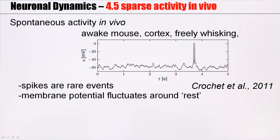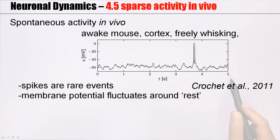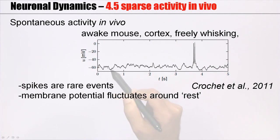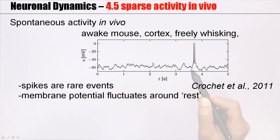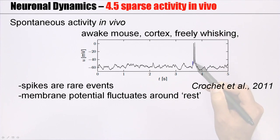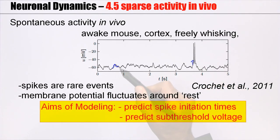Cortical neurons spontaneously emit spikes. In a total period of 5 seconds, there are only 2 spikes — spikes are sparse, they are rare events. Most of the time, the membrane potential is fluctuating sub-threshold, around some reference or resting potential. The aim of modeling is to say: when is one of these rare moments that the neuron is going to emit a spike? Moreover, can we predict the sub-threshold voltage with a neuron model?